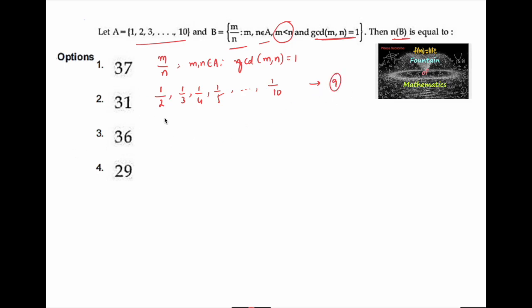Starting with 2: 2 upon 3 is valid, 2 upon 4 we cannot take, 2 upon 5 is valid, 2 upon 6 we cannot take, 2 upon 7 is valid, 2 upon 9 is valid. So only 4 elements.